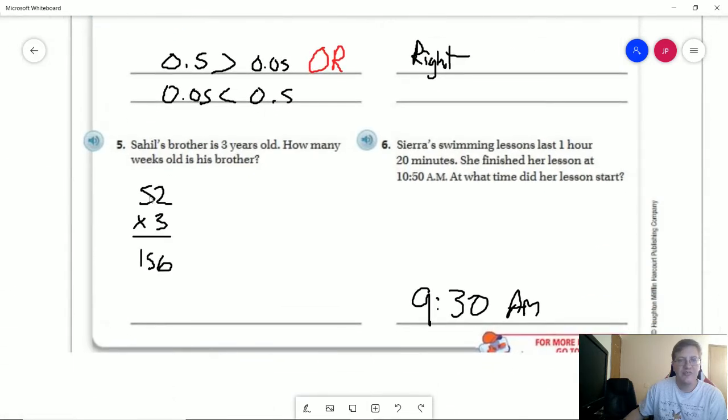Number five, we are going to have 52 times three, which we had in the beginning of the lesson video. So that's going to give us 156, and that's in weeks.